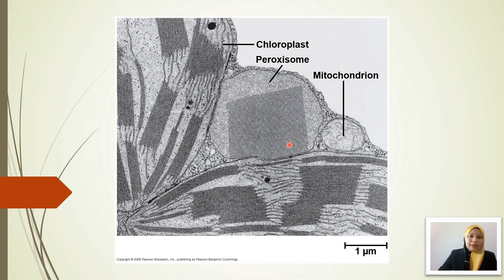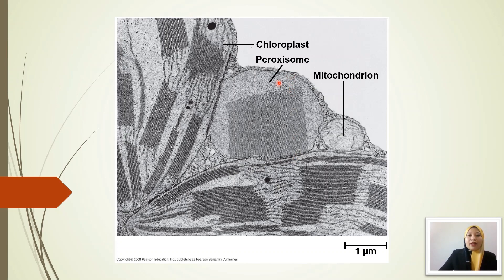Here is an observation under the light microscope. We can look at the structure of the chloroplast and the mitochondria, and we can also identify the peroxisome. Remember that the shape is spherical and they have a single membrane — a single membrane at the outer layer. That is the peroxisome.